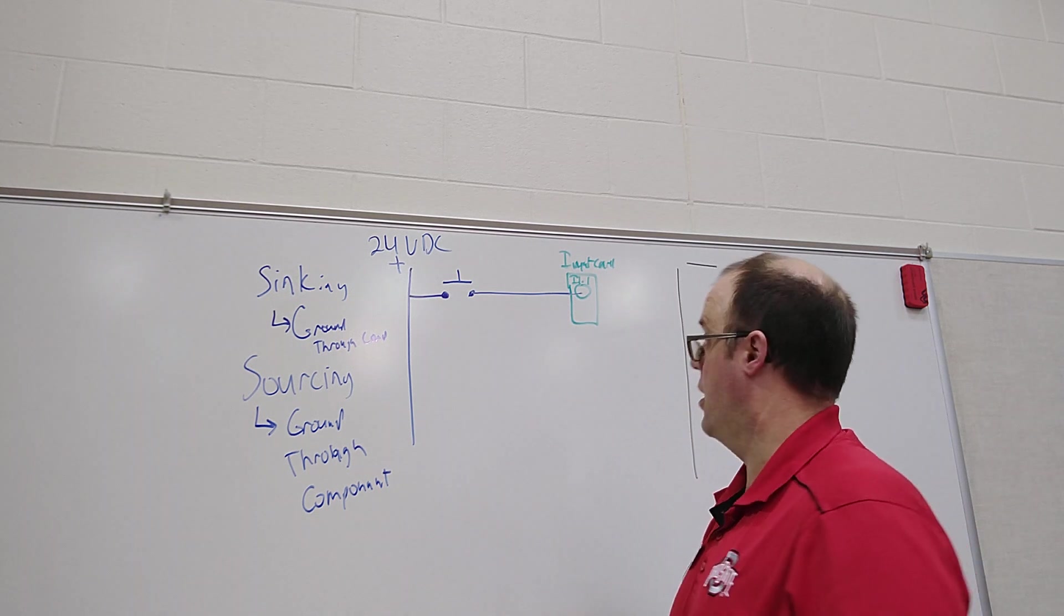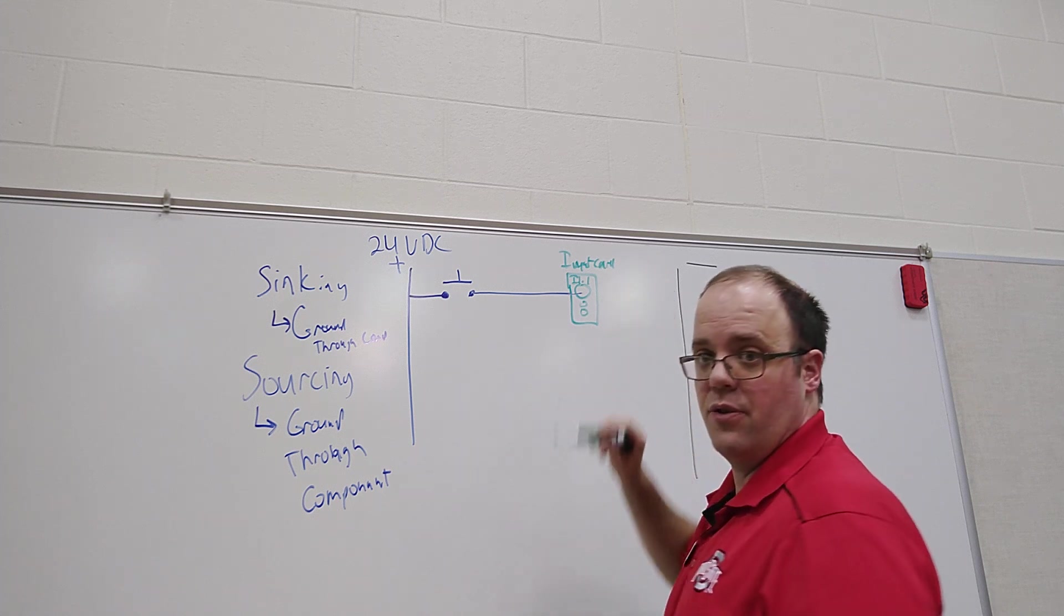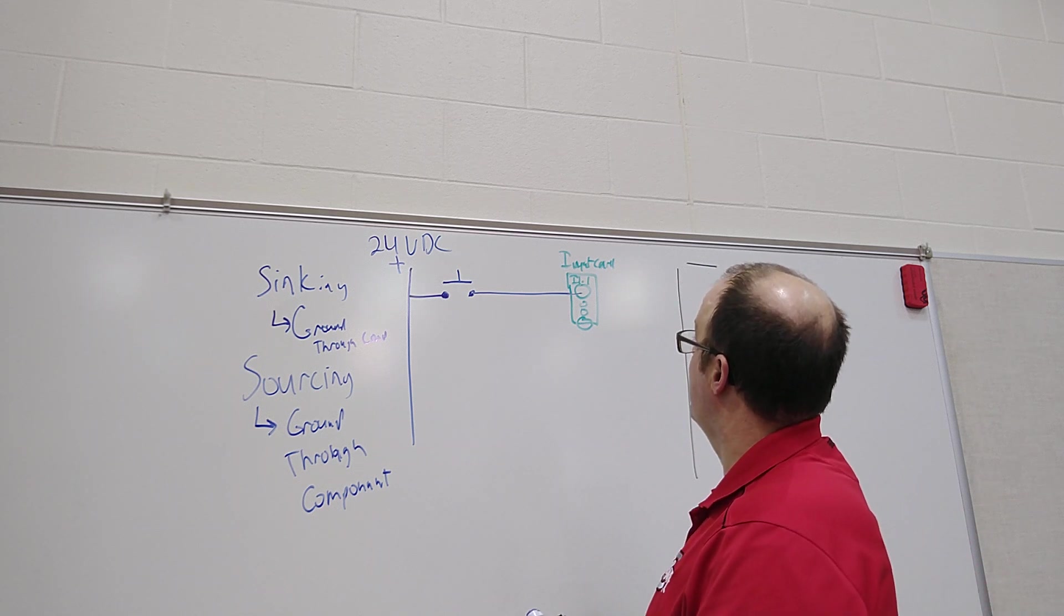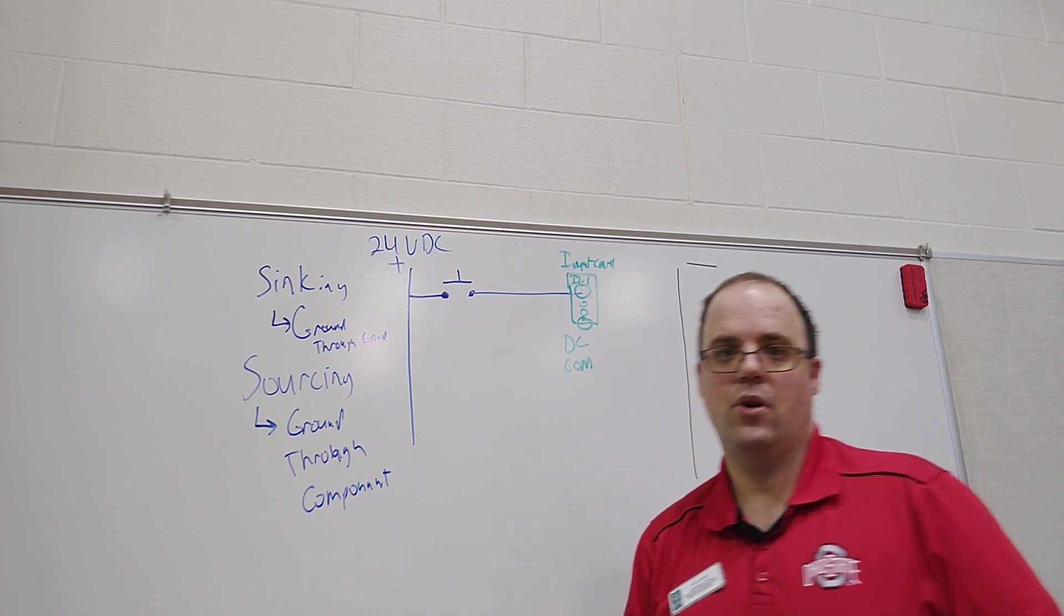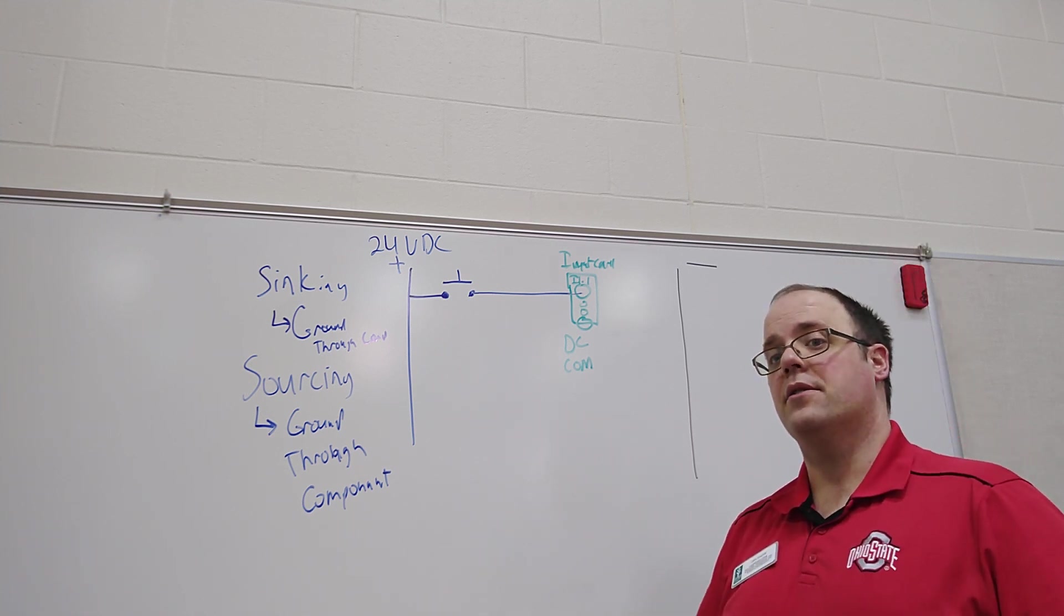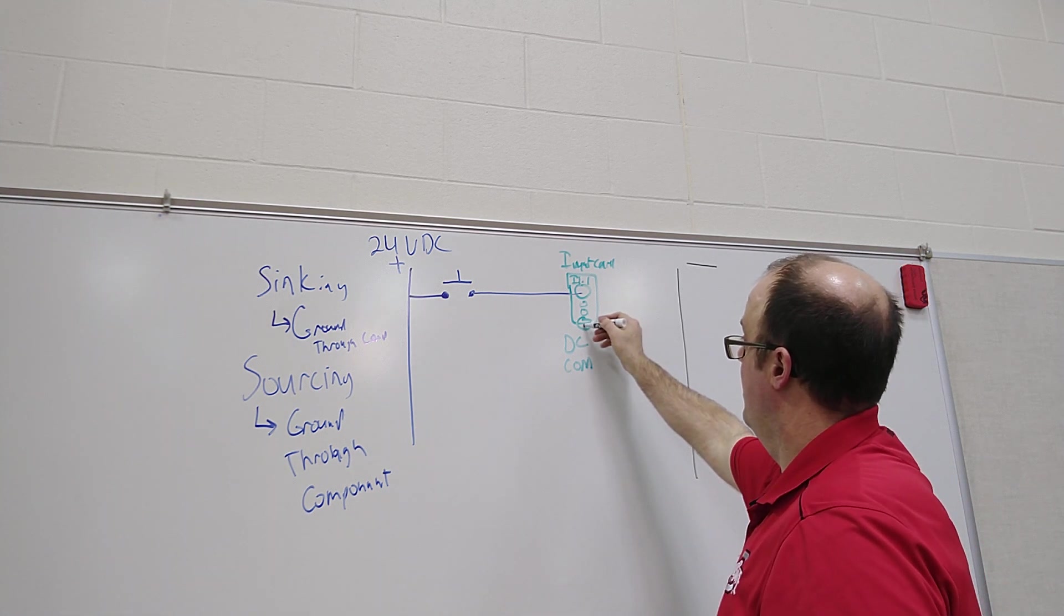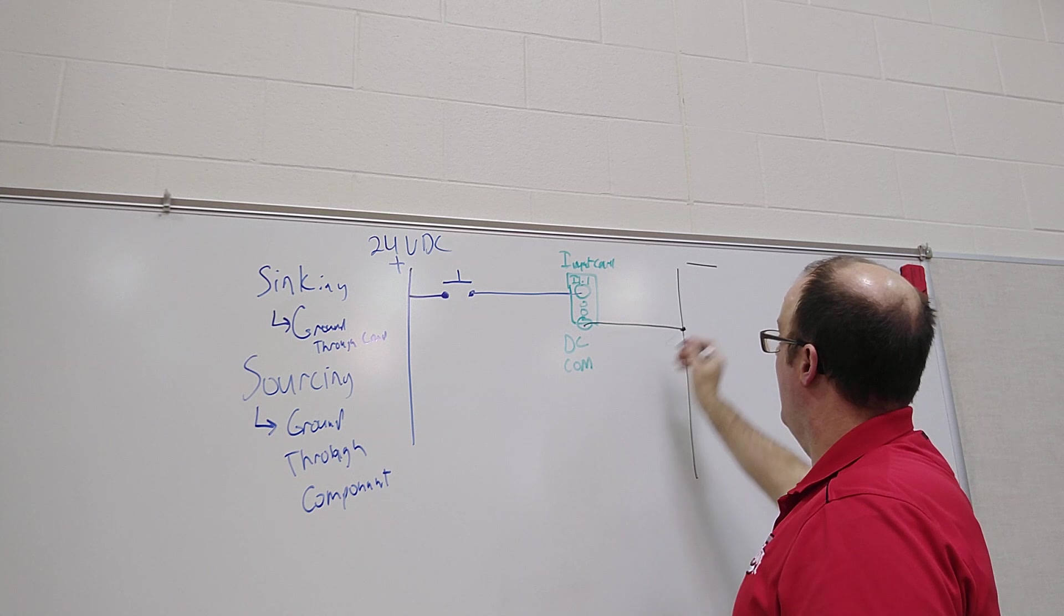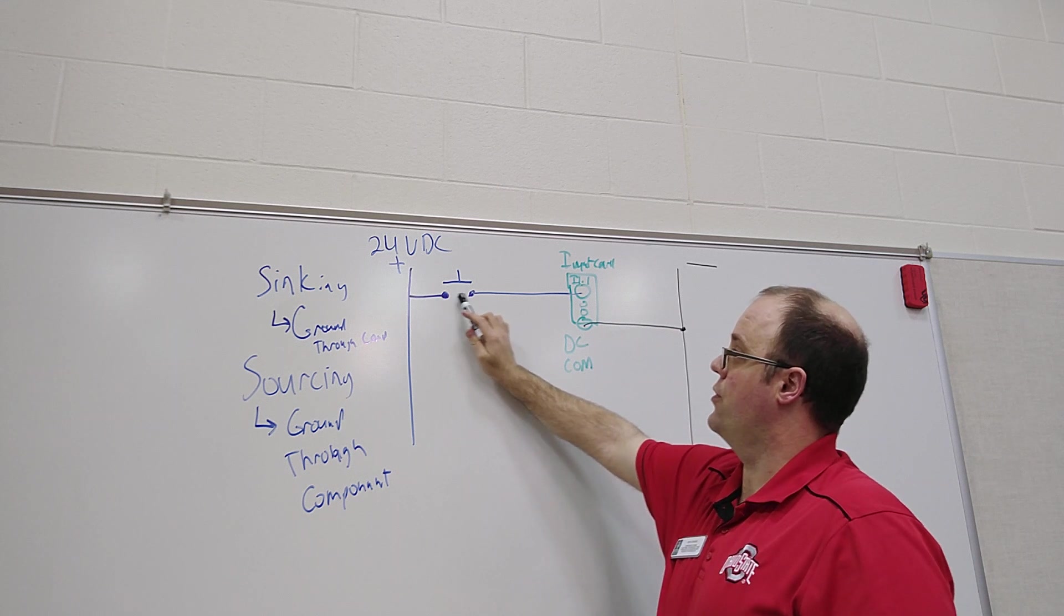Then somewhere else on the input card, because input cards are usually long so it's going to have a bunch of little screws, I'm going to put another at the very bottom or somewhere else on that screw terminal, there will be something that says DC common, and that implies that I need to then wire that screw terminal to a negative or a ground, not an actual physical ground, ground in DC.